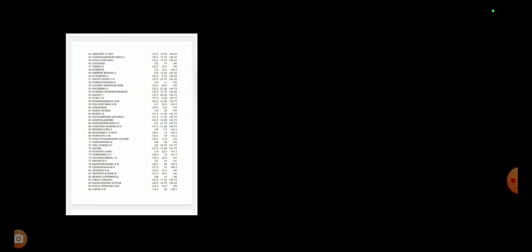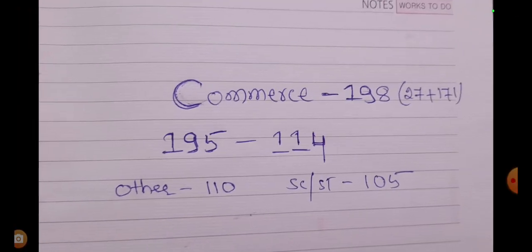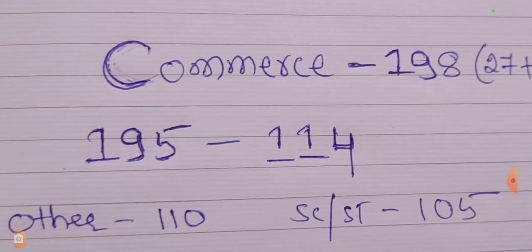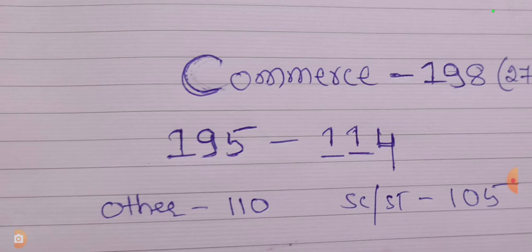It is the lowest mark on the list. In commerce, there are 198 posts. The highest mark is 195 for the first candidate, and 174 for the last candidate. The last candidate post count is 1148.